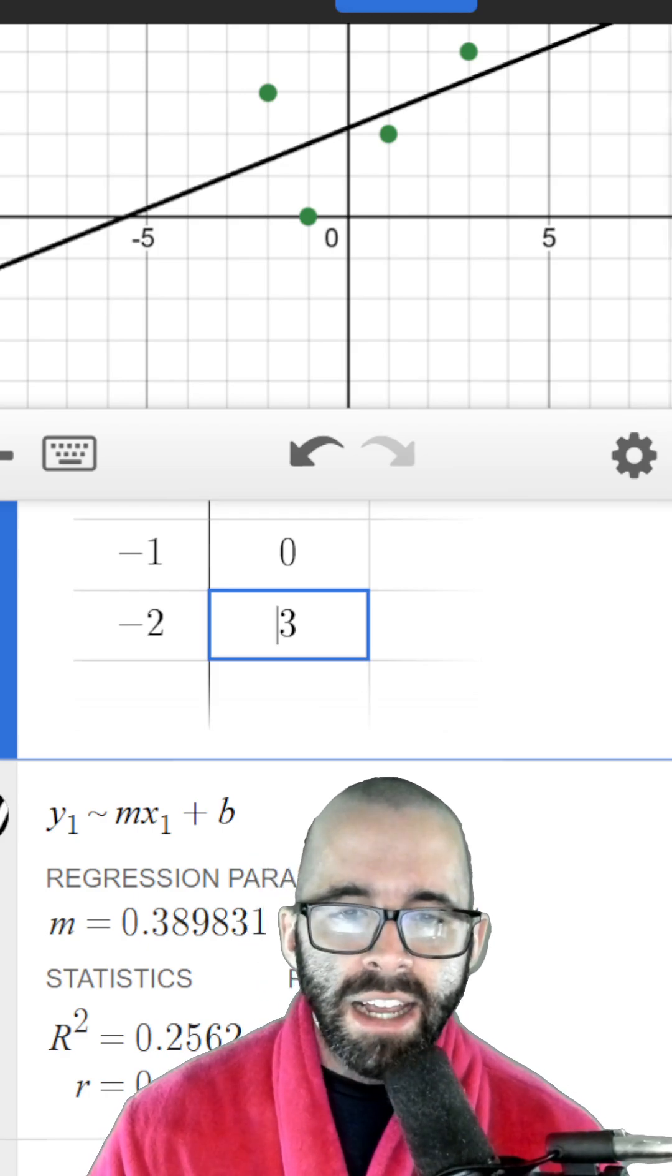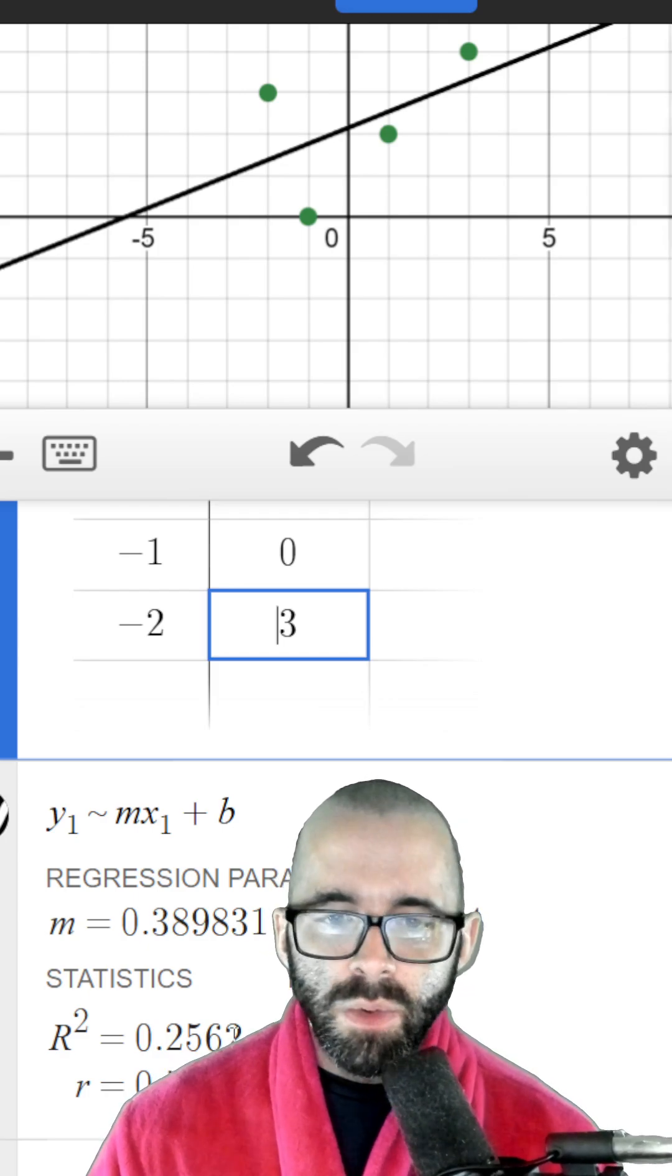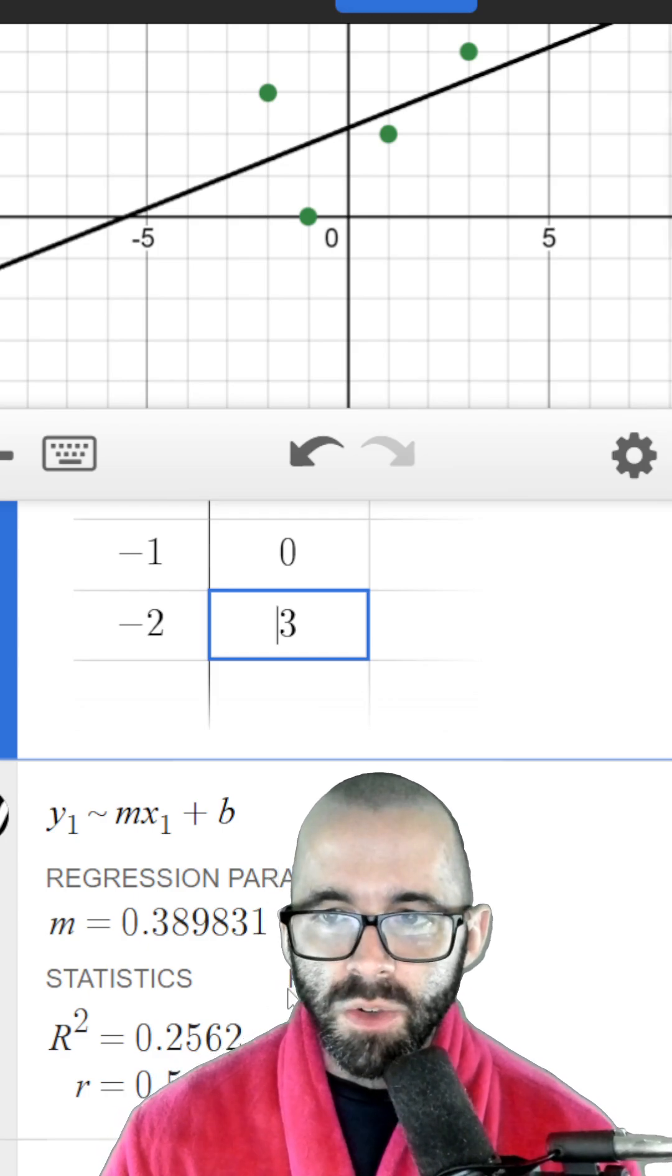Your R value will be positive or negative depending on whether your slope is positive or negative as well, but R squared will always be between zero and one.